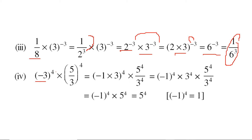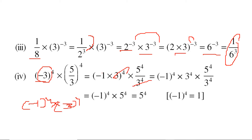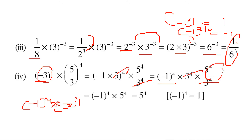For minus 3 divided by minus 3 to the power 4: this is 5 by 4 — we write minus 3 as minus 1 times 3, so we get minus 1 to the power 4 into 3 to the power 4. The 3 to the power 4 in the numerator cancels with 3 to the power 4 in the denominator. Now, minus 1 raised to an even power gives 1, and minus 1 raised to an odd power gives minus 1. Since 4 is even, minus 1 to the power 4 is 1. So the 3 to the power 4 terms cancel, leaving 5 to the power 4 as the answer.